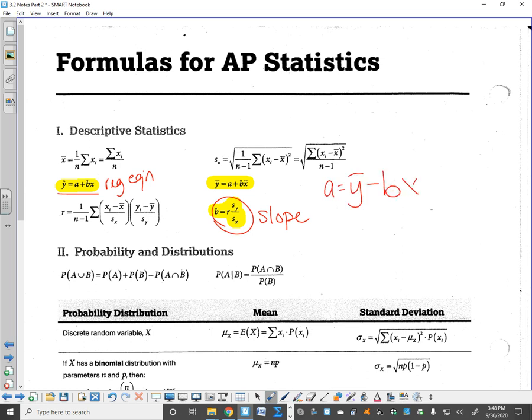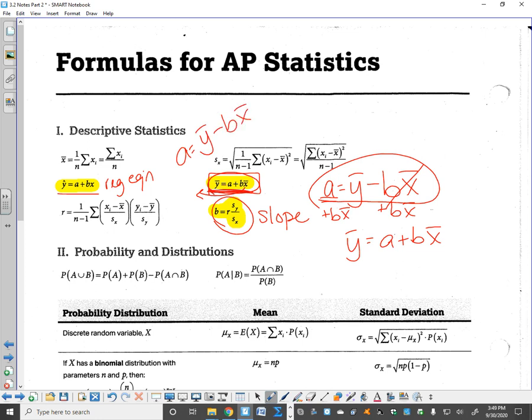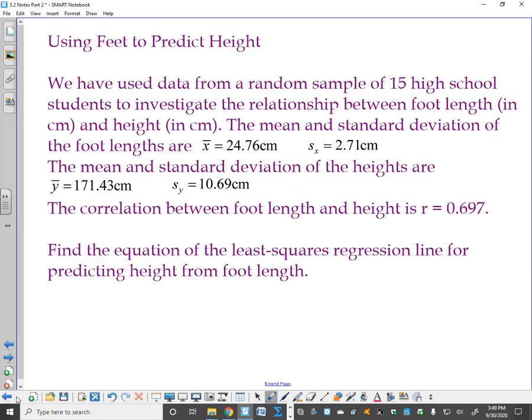Now, the other formula that they give you isn't in the same form as was on the previous screen. I gave you this because we're trying to use this to find a. They're giving it to you like this, which is the same thing. All they've done is add this over. I think it makes more sense to think about it like this because I'm using it to find my y-intercept. But this is what you're going to have available to you. So you can take this equation right here and subtract the bx-bar over and you'll get a equals y-bar minus bx-bar. So these three formulas are always going to be made available to you.